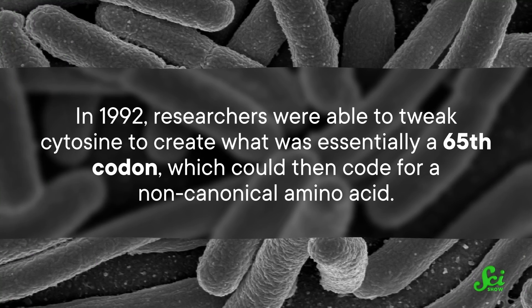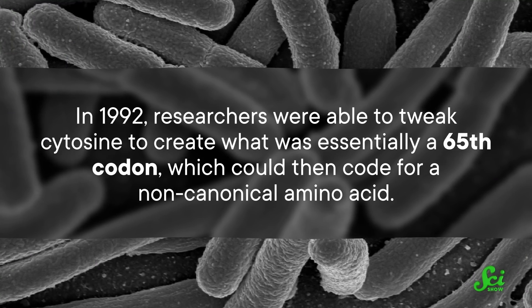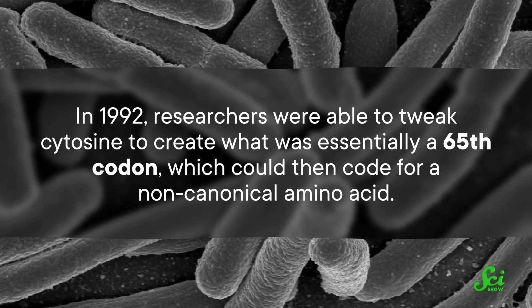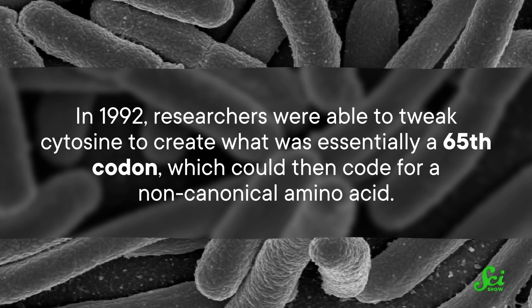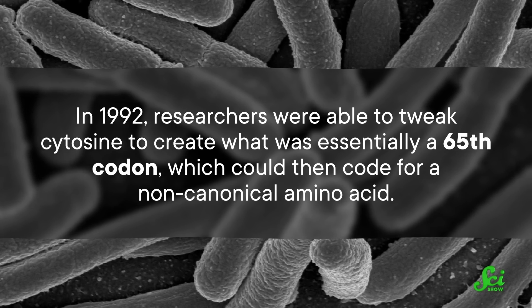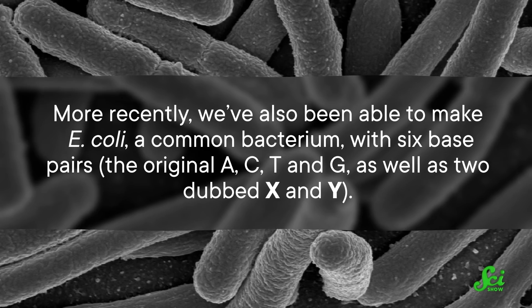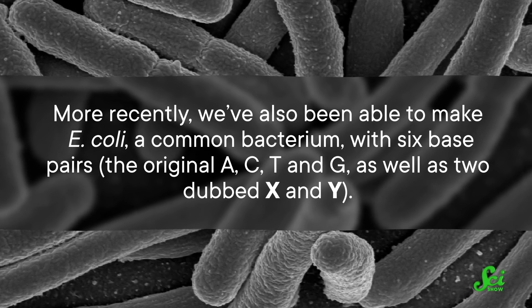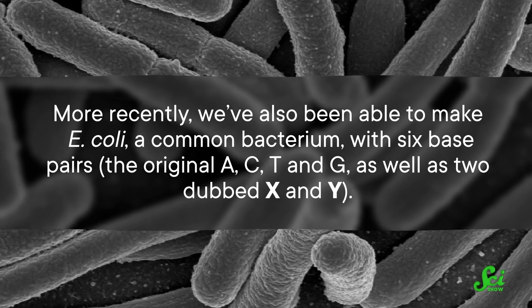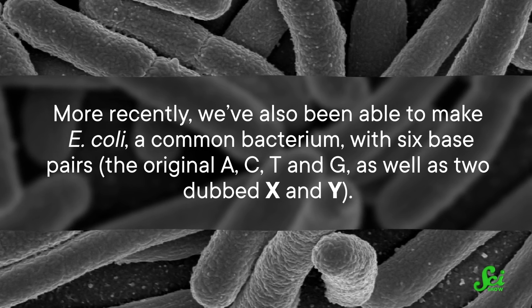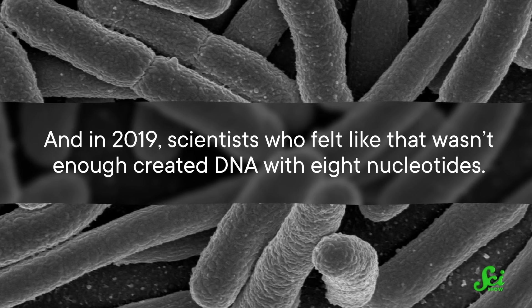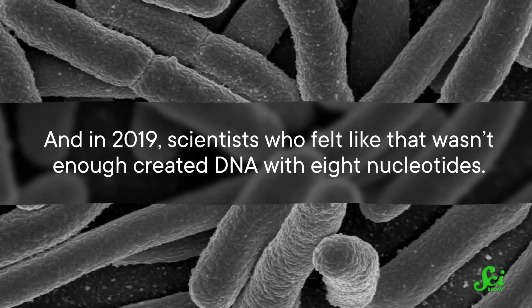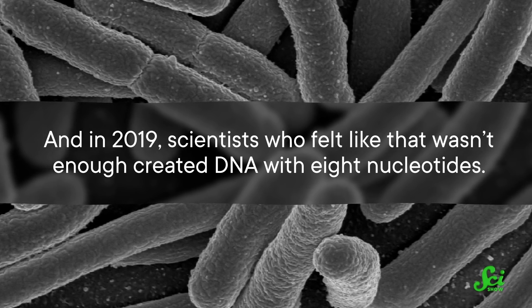One way to reprogram the code is actually just to go ahead and add in more letters. For example, in 1992, researchers were able to tweak cytosine to create what was essentially a 65th codon, which could then code for a non-canonical amino acid. More recently, we've also been able to make E. coli, a common bacterium, with six base pairs — the original A, C, T, and G, as well as two dubbed X and Y. And in 2019, scientists who felt like that wasn't enough created DNA with eight nucleotides.